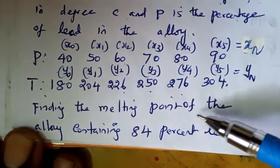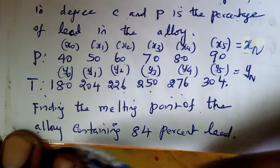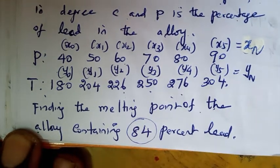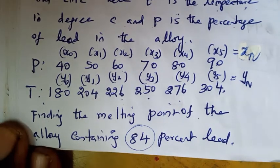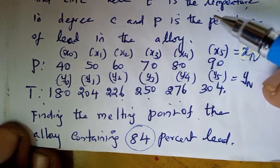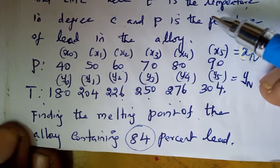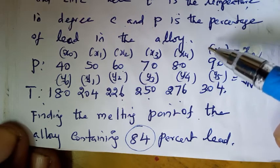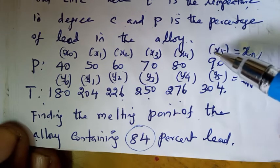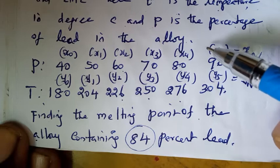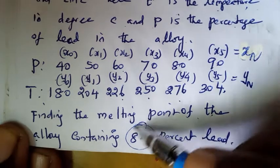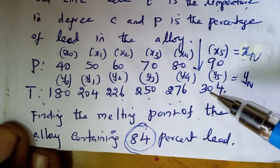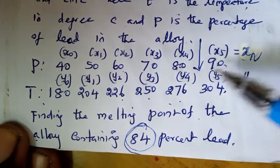The question is: find the melting point of the alloy containing 84% lead. So we need to find the temperature. The percentage value given is 84, and 84 lies within 80 to 90.